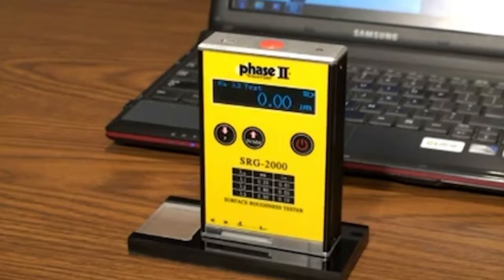Parameters differ in how they look at peaks and valleys. The most popular parameter is RA, which is commonly defined as the arithmetic average roughness.